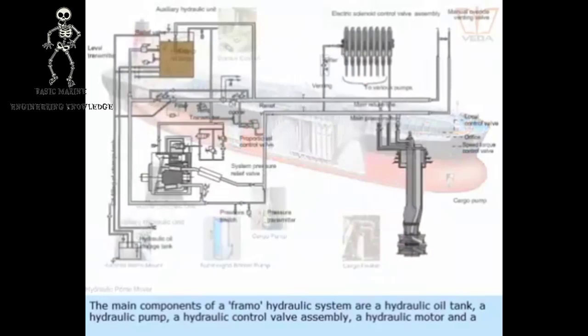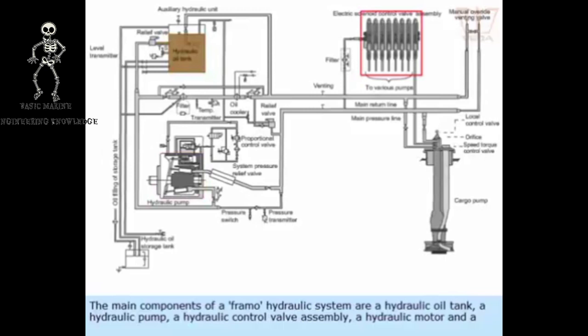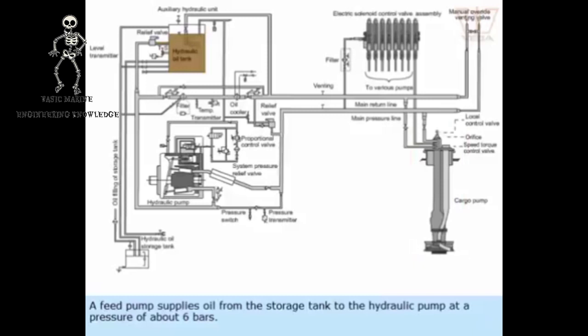The main components of a FRAMO hydraulic system are a hydraulic oil tank, a hydraulic pump, a hydraulic control valve assembly, a hydraulic motor, and a cargo pump.